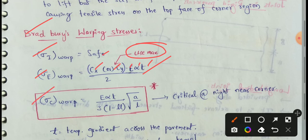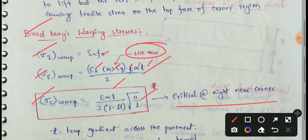Warping stresses at the corner: the formula is E·σ·T divided by 3, multiplied by 1 minus mu, into root of A divided by L. This is critical at night near the corner region.